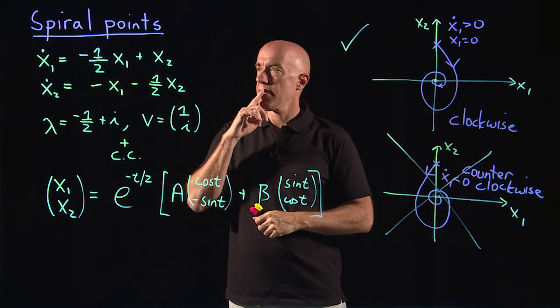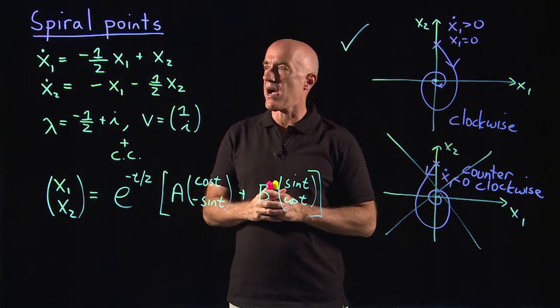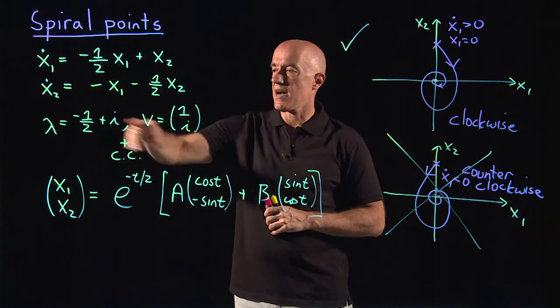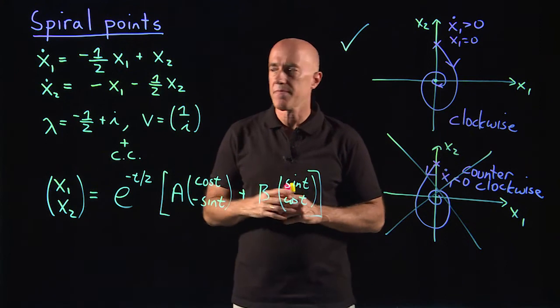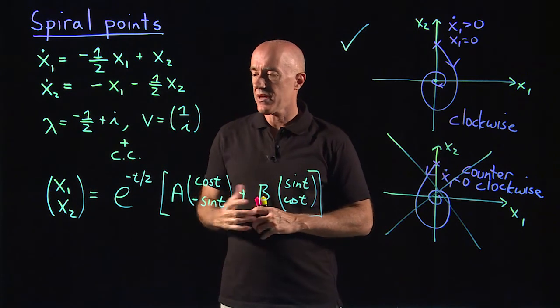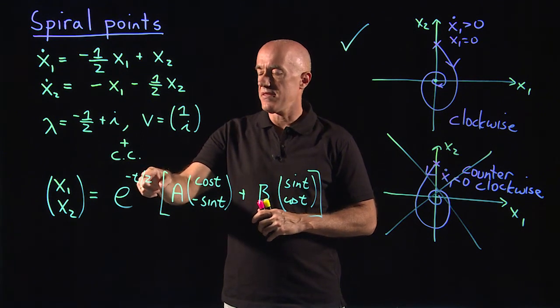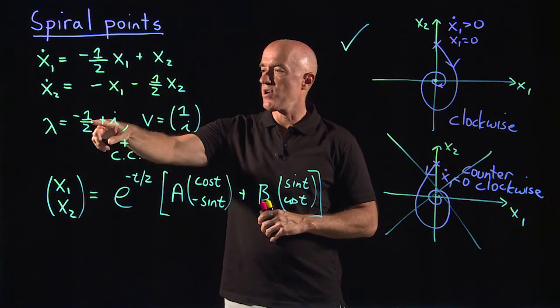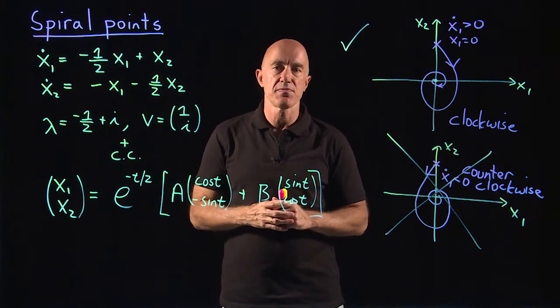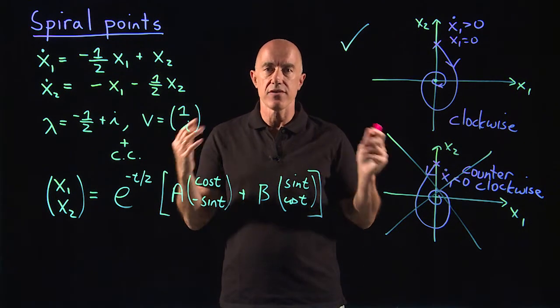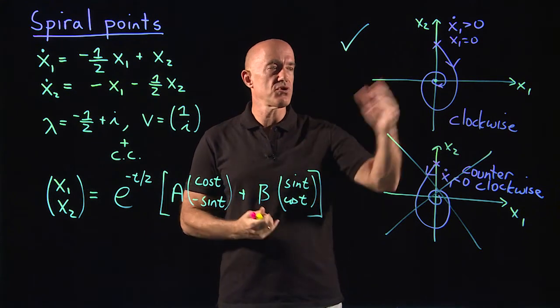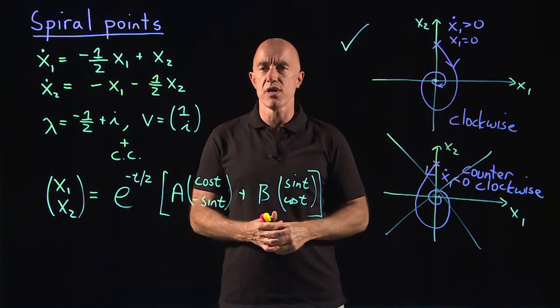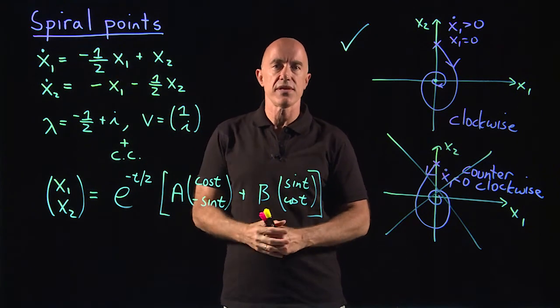So let me review. In this last and final case, we considered spiral points. Here, the eigenvalues are complex. They show up as complex conjugate pairs. The key here is the real part of the eigenvalue. So if the real part is negative, then this is a stable spiral. All solutions spiral into the origin. If the real part is positive, then this is an unstable spiral. All solutions spiral out of the origin. Then you have two choices, whether it's a clockwise spiral or a counterclockwise spiral. You can determine which one it is by examining the differential equation.